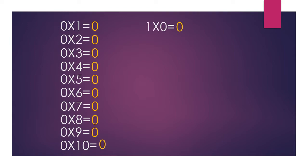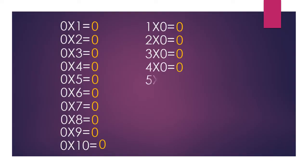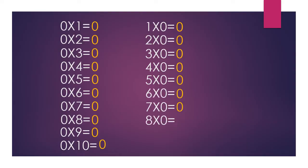1 0's are 0, 2 0's are 0, 3 0's are 0, 4 0's are 0, 5 0's are 0, 6 0's are 0, 7 0's are 0, 8 0's are 0, 9 0's are 0, 10 0's are 0.